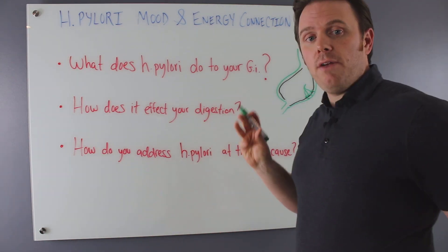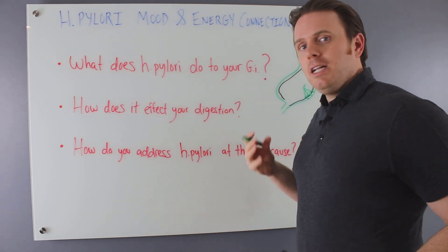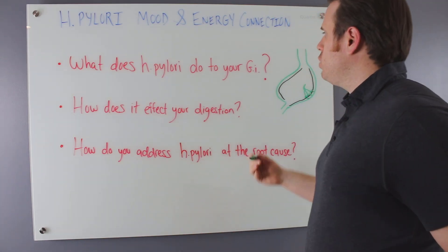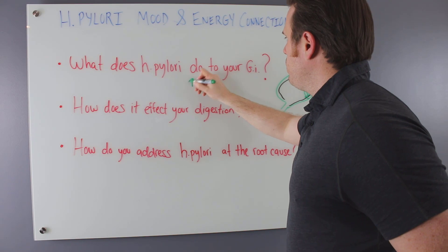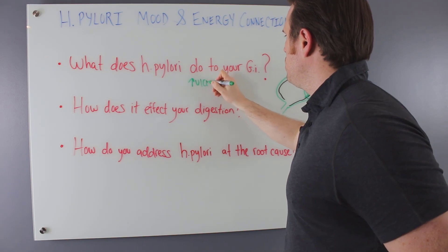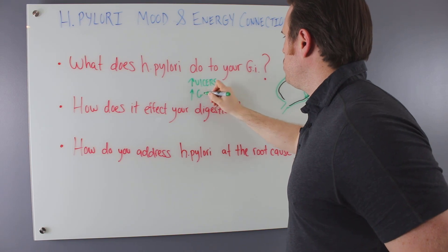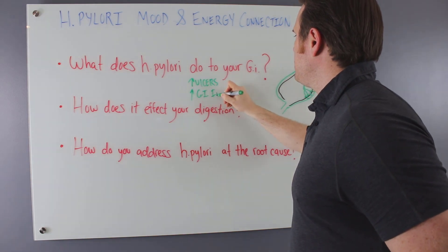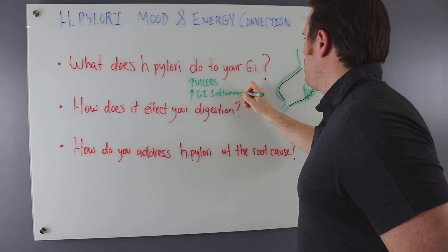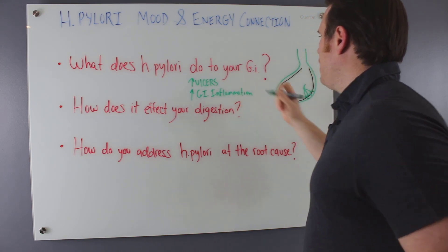One, it's trying to hide away from the stomach acid a little bit. It's creating inflammation. We know H. pylori increases chances of ulcers. We have increased ulcers. We have increased gut inflammation with H. pylori.